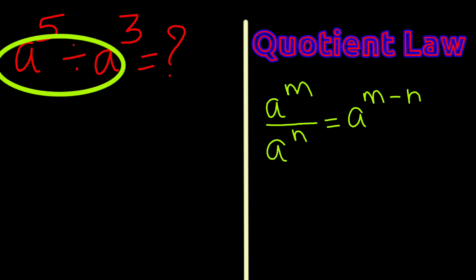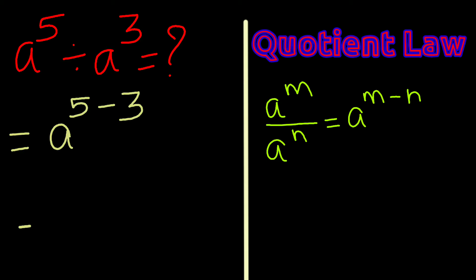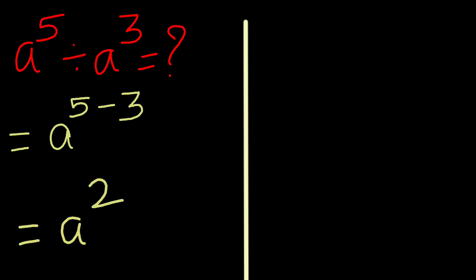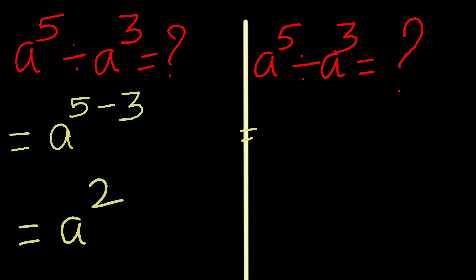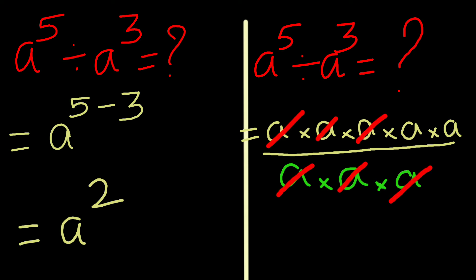Now let's look at the division rule. For example, a to the power 5 divided by a to the power 3 equals a to the power 5 minus 3, which equals a to the power 2. We can verify: a to the power 5 written as a times a times a times a times a, divided by a to the power 3 as a times a times a. After canceling common factors, we have a to the power 2.